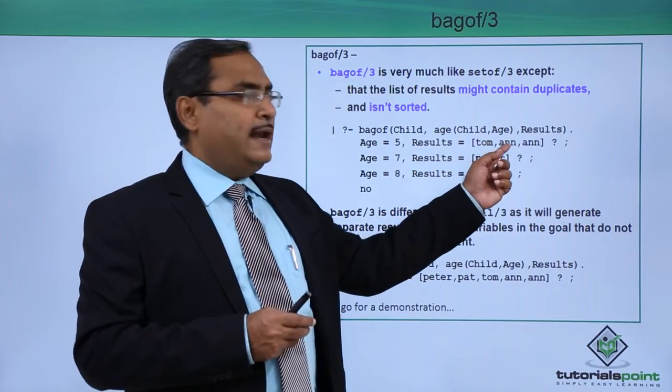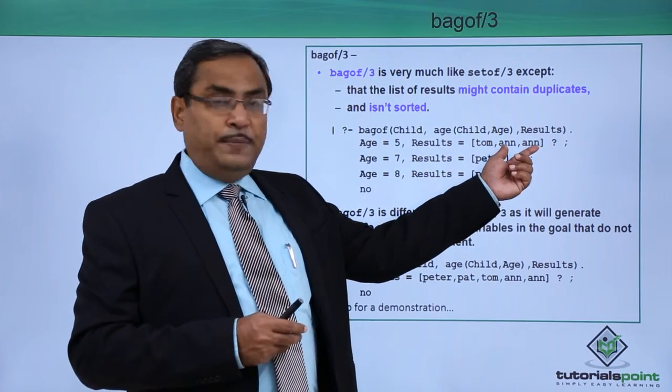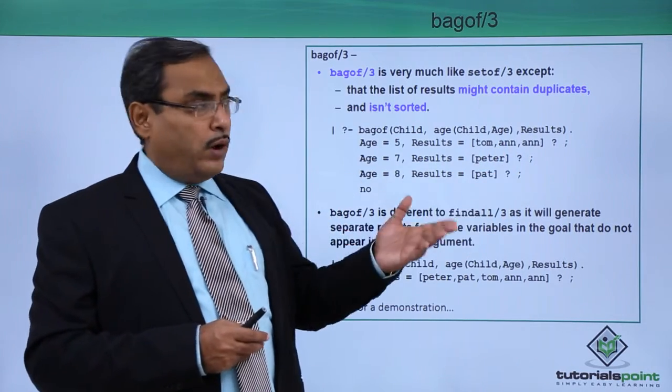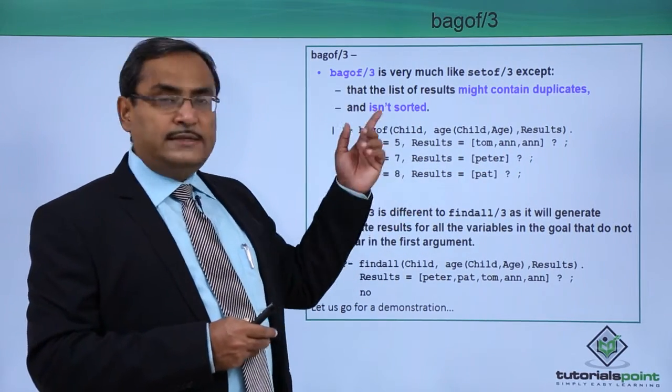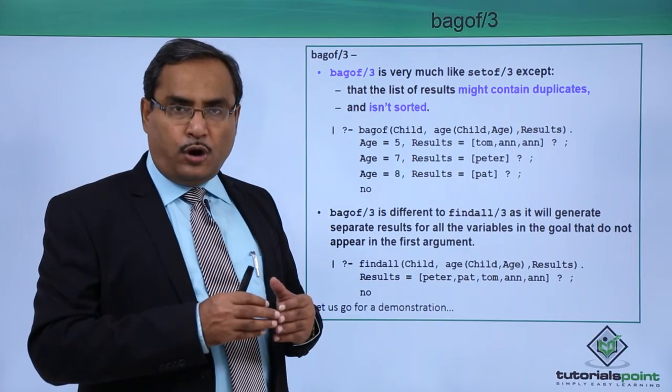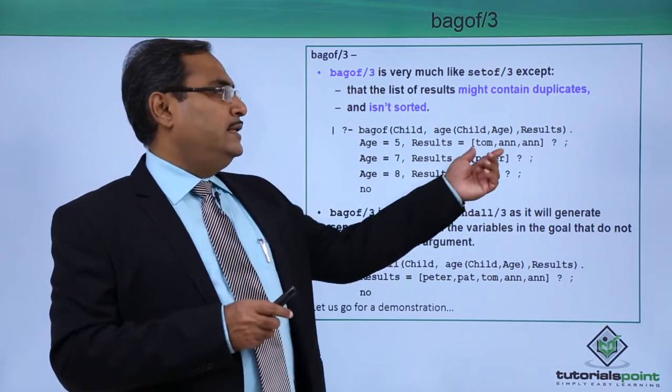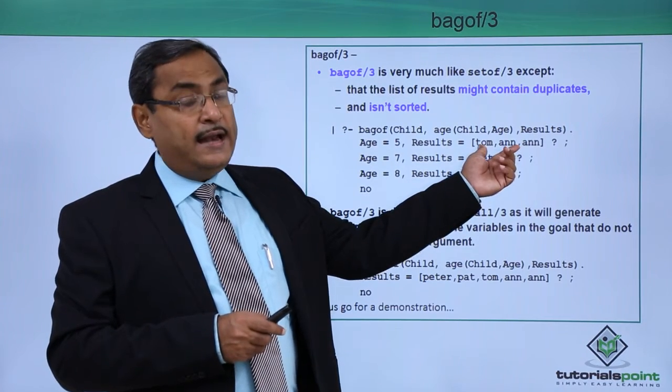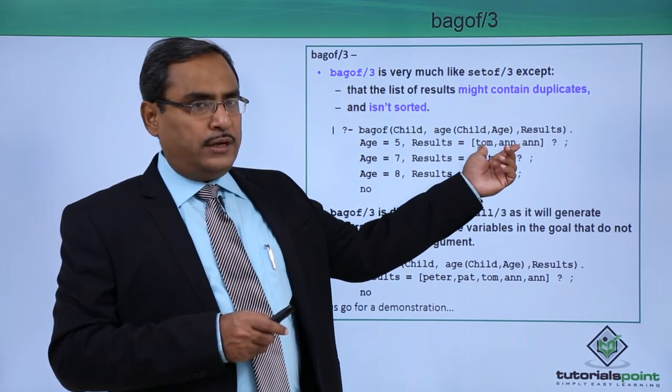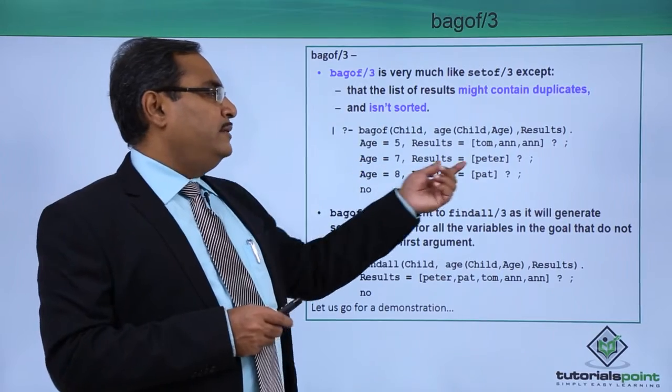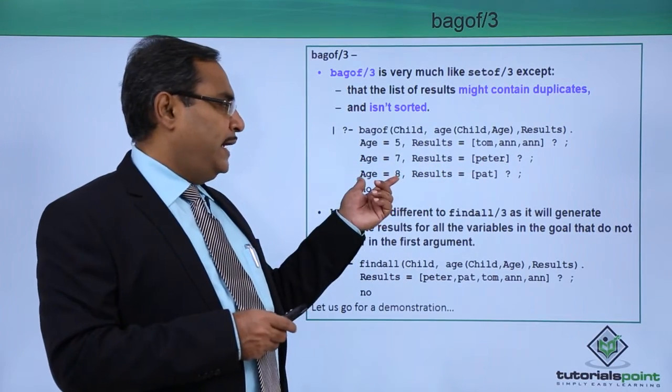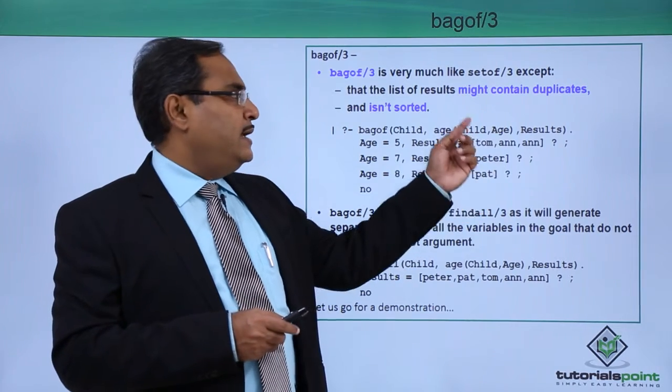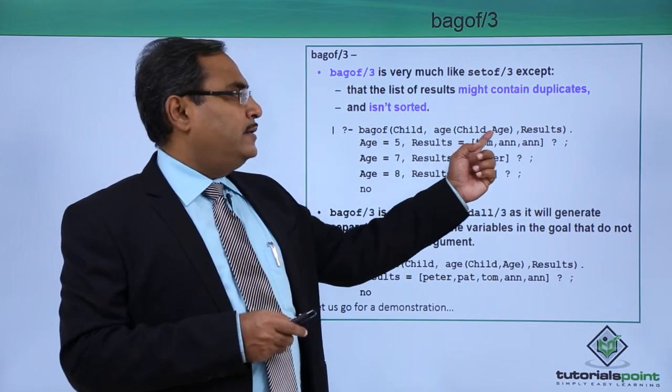In that case we shall find that with the age 5 we shall have 3 names, that is Tom, Ann, Ann. Here you see the repetition of list elements are there and they are not sorted. But if you watch the separate video for this setof inbuilt predicate in Prolog, there you have shown that these names will be coming in the alphabetical order, sorted ascending order, and Ann will be coming once only. In case of age 7 the output will be Peter. In case of age 8 output will be Pat because in the knowledge base it was written as age Pat 8.